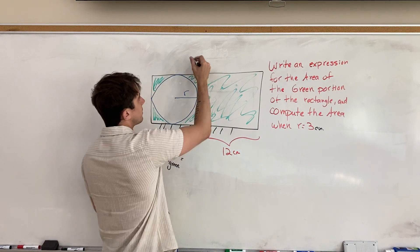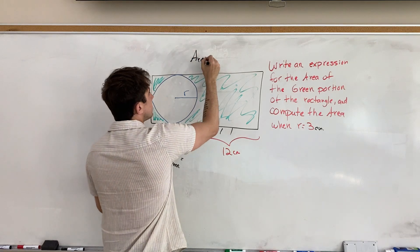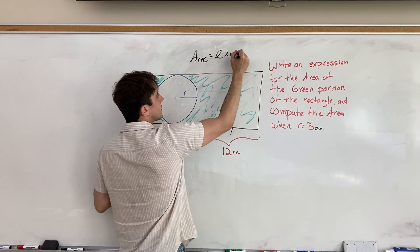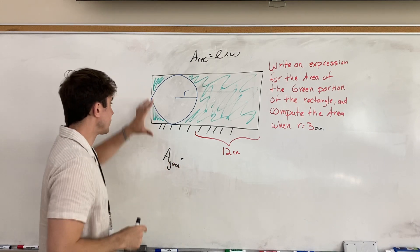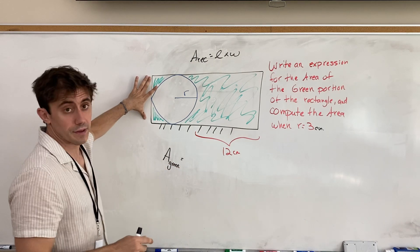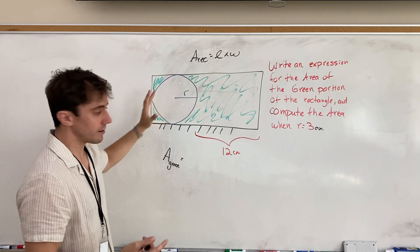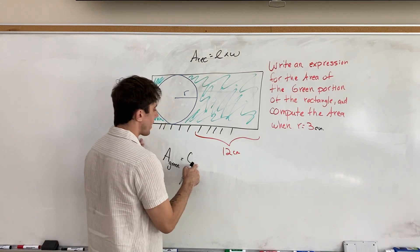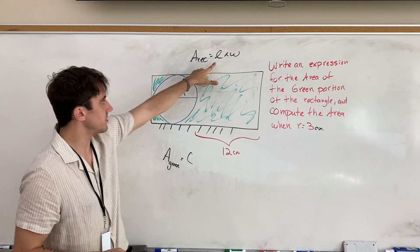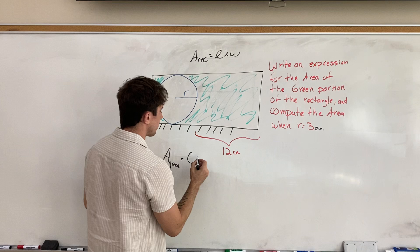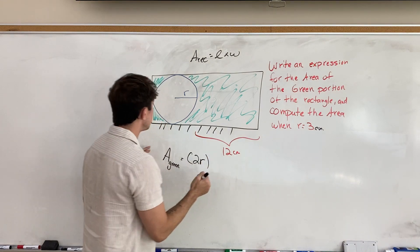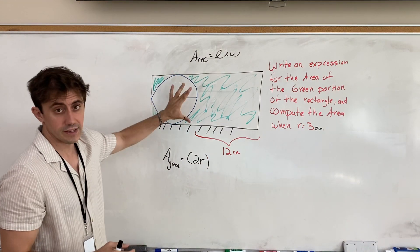So since the area of the rectangle is, of course, length times width, we all know that, we're going to start by writing an expression for just the width, which again is two radii. So in one bracket, I'm going to put this in brackets so that we can visualize it being length times width. So I'm going to start off with 2r, double the radius for the vertical height, the width.